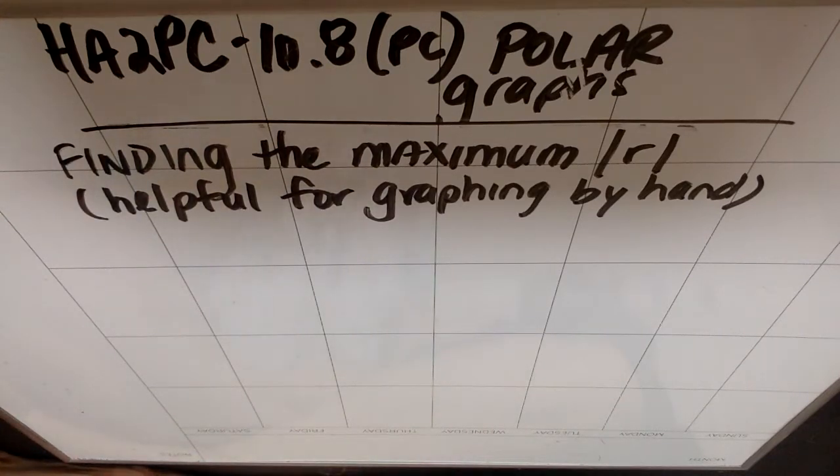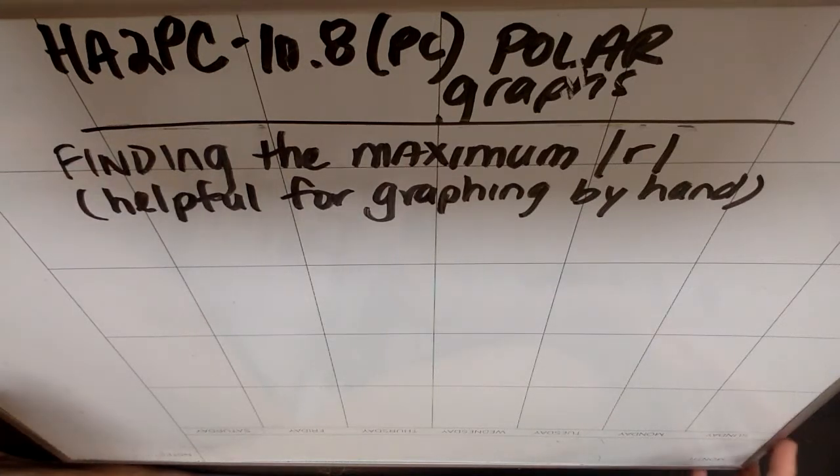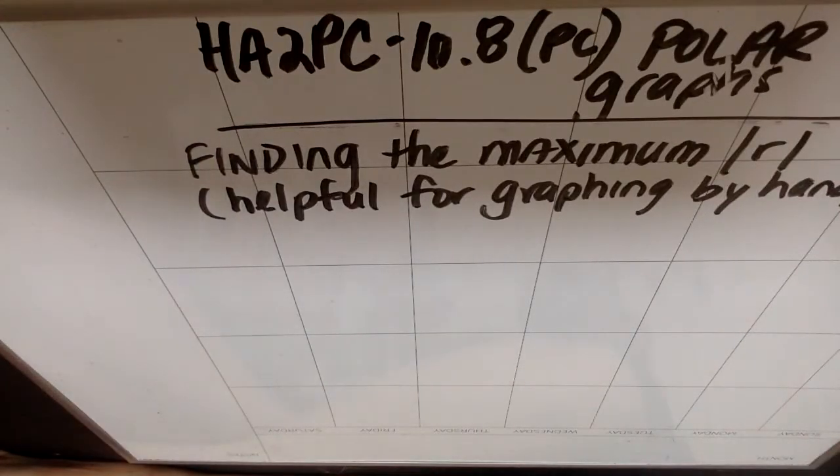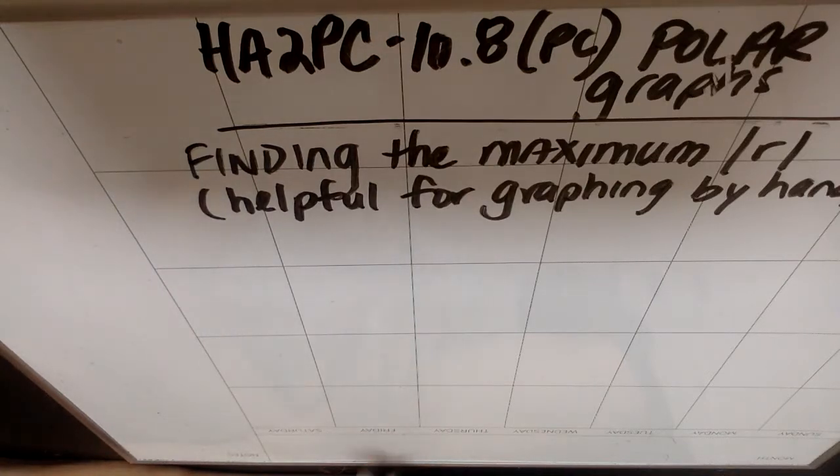So we're going to talk about finding the maximum absolute value of r for a polar equation and how that's helpful for graphing by hand. I'm not going to make you graph by hand again, but this is helpful if you're graphing by hand to sort of figure out how big, how many rings you need on your graph. So let's do a couple of examples.